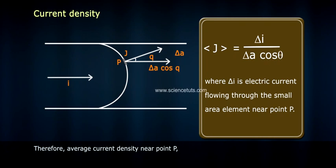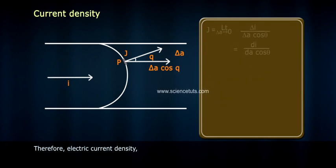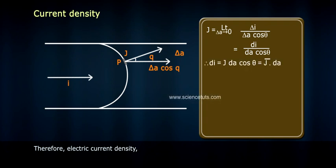Therefore, electric current density J = lim(ΔA→0) ΔI/(ΔA cos θ) = dI/(dA cos θ).